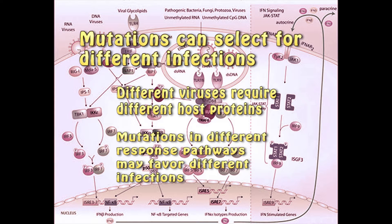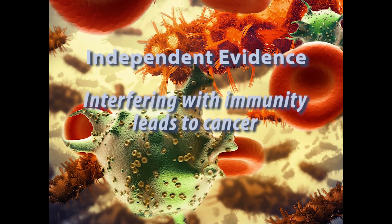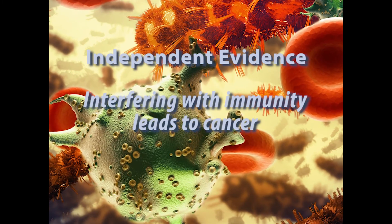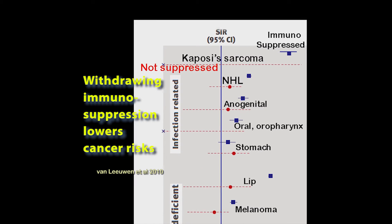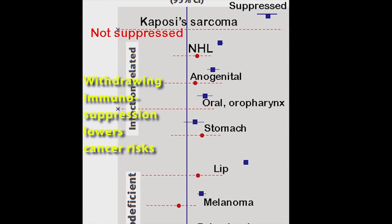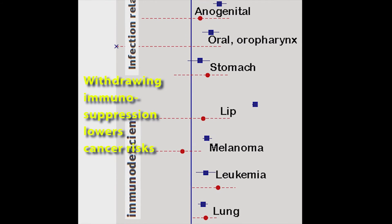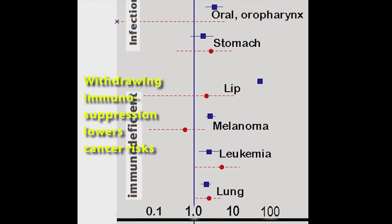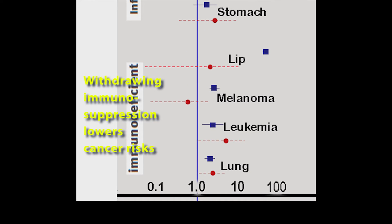It is well known that damage or suppression of the immune system increases cancer risks. An example of this is increased cancer risks in kidney transplant patients. Risks for cancers associated with infections in immunosuppressed kidney transplant patients are shown by the dark squares. When the transplant fails and suppression is stopped, risks are shown by the red circles. The graph shows that most of the time, removing immunosuppression restores cancer risk back to normal.